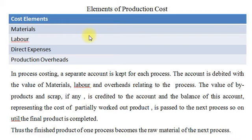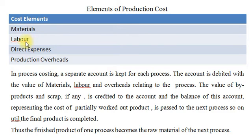Now let us see the elements of production cost or process cost. The cost elements are: direct materials, direct labor, direct expenses, and production overheads. In process costing, a separate account is kept for each process, normally called a Process Account.